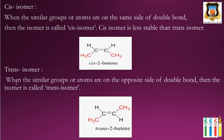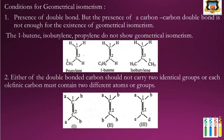The trans isomer is when similar groups or atoms are on the opposite side of the double bond. In trans-2-butene, the two CH₃ groups are on opposite sides of the double bond.